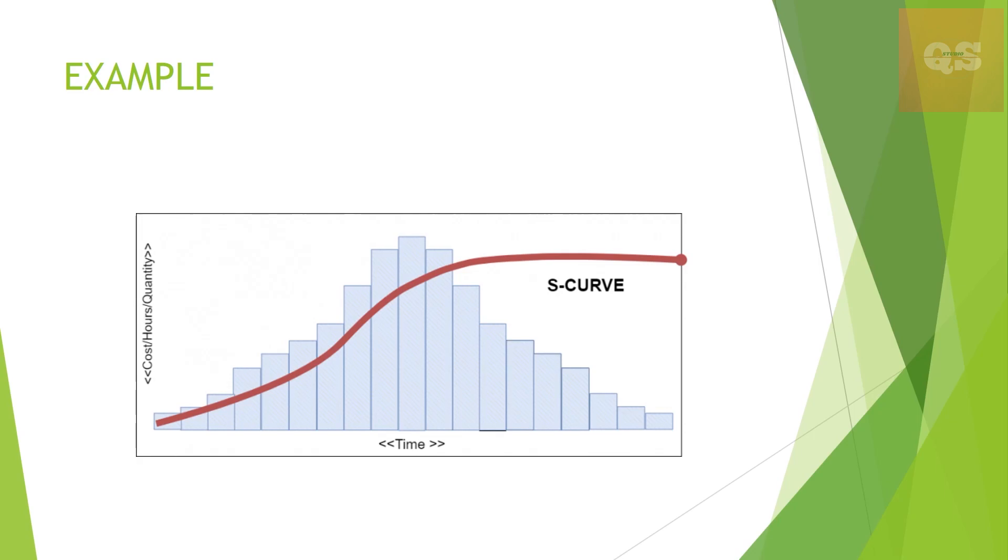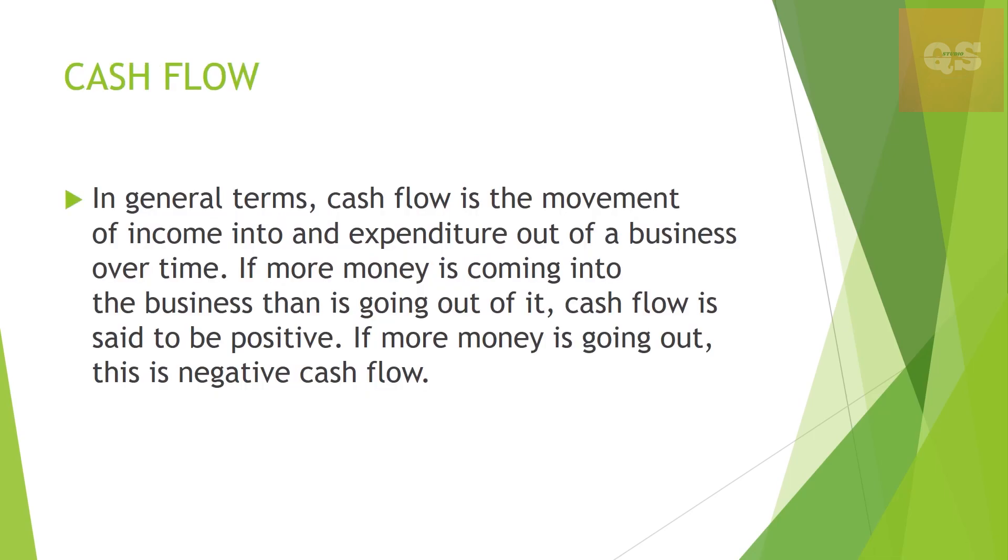So that is how this shape is formed. Let's understand what cash flow is. In general terms, cash flow is the movement of income into and expenditure out of a business over time. If more money is coming into the business than is going out of it, cash flow is said to be positive. If more money is going out, this is negative cash flow.